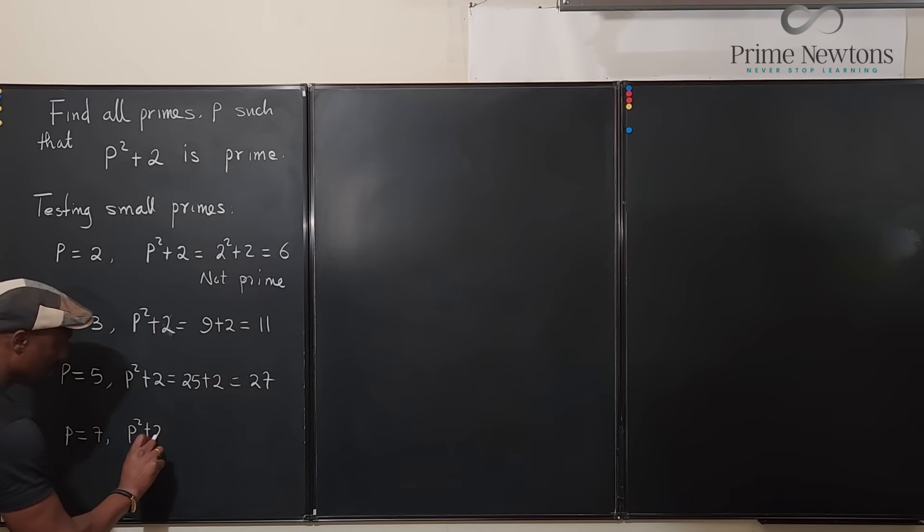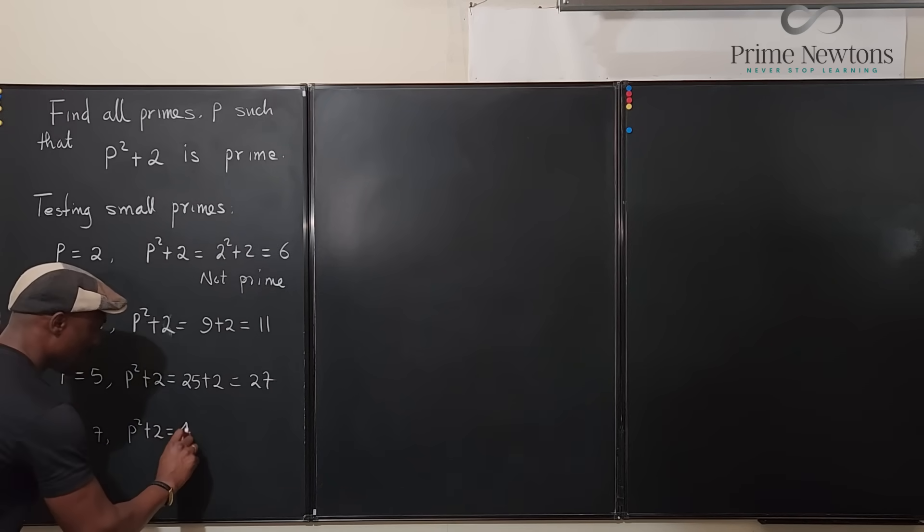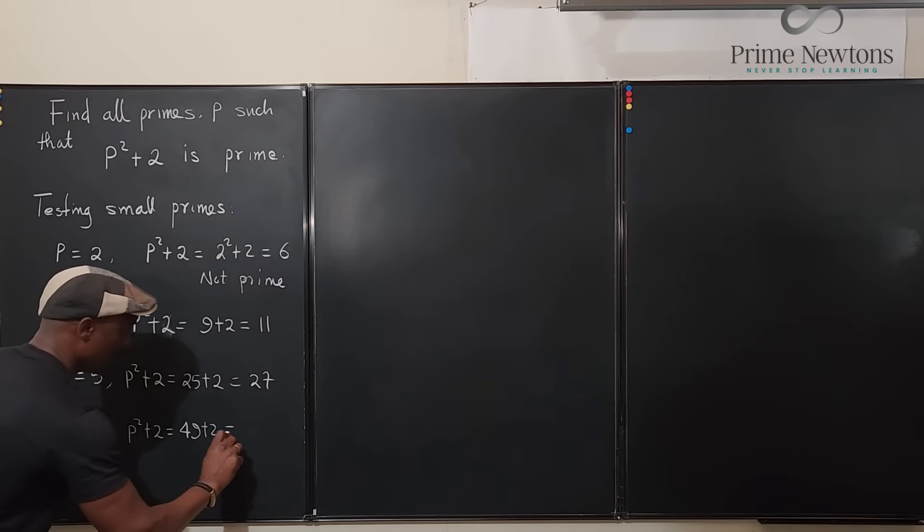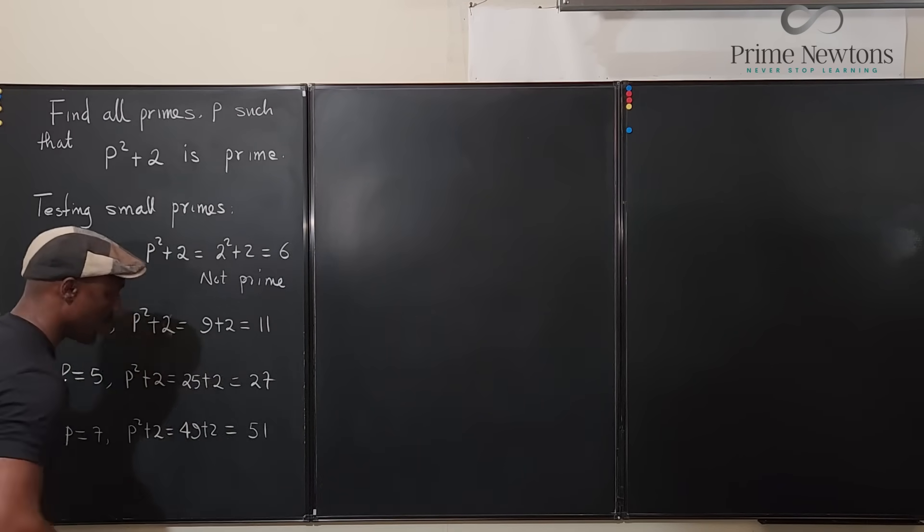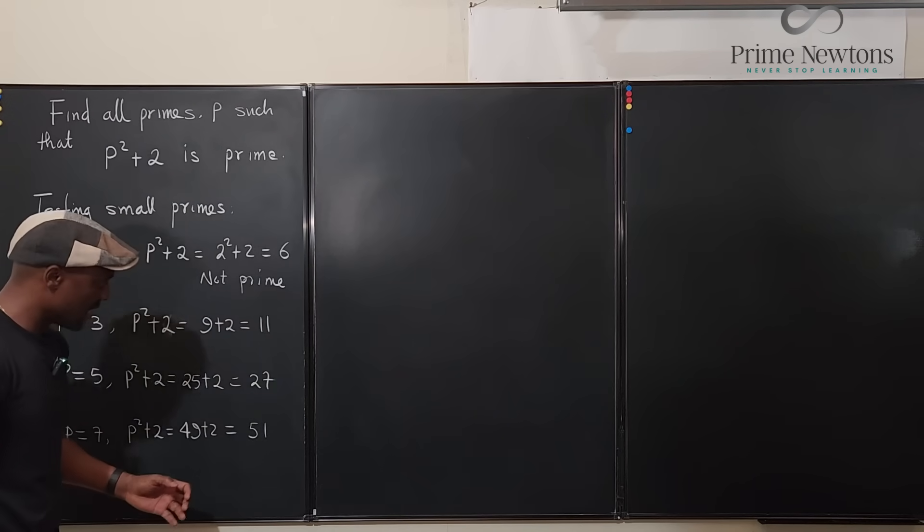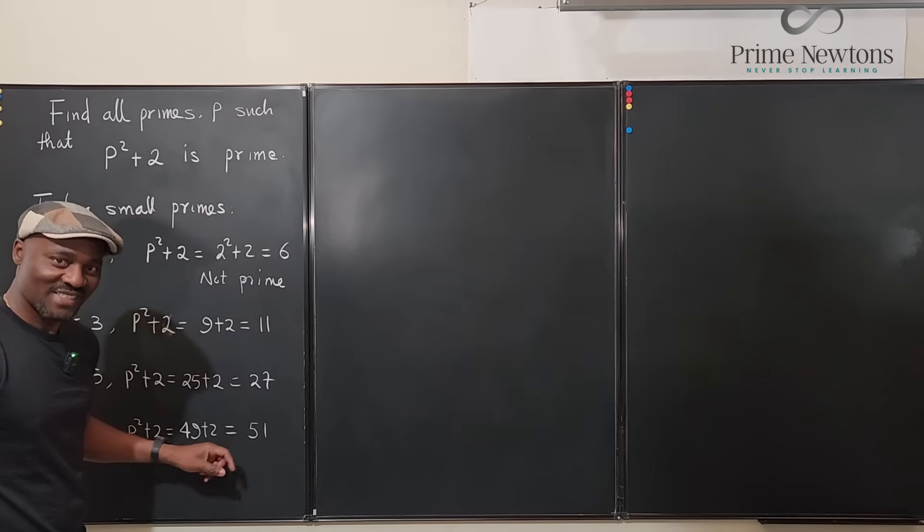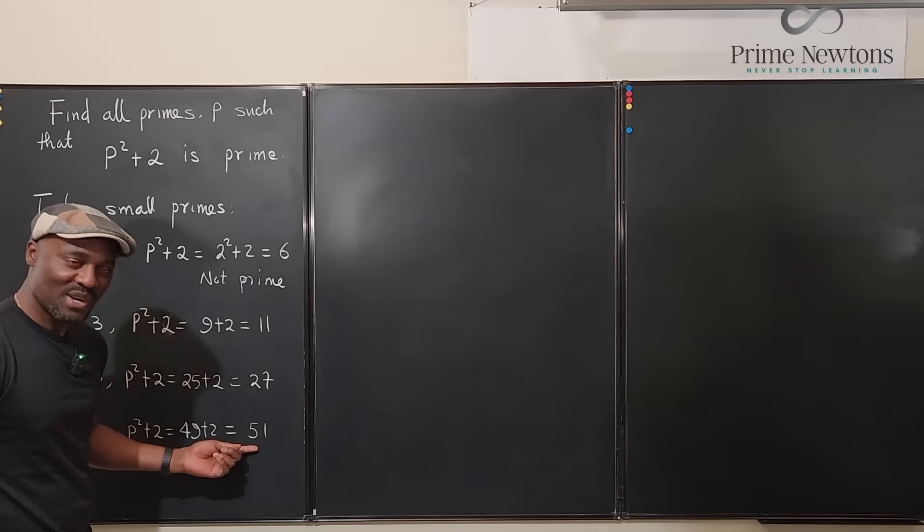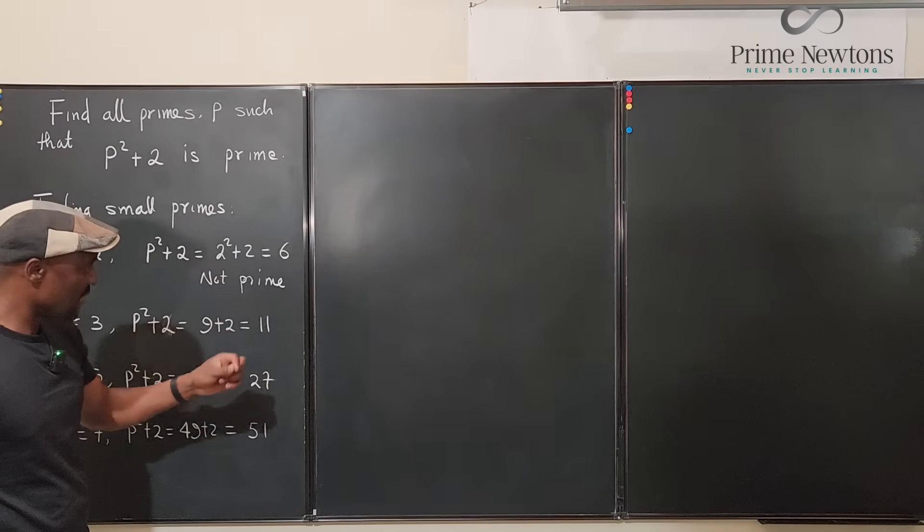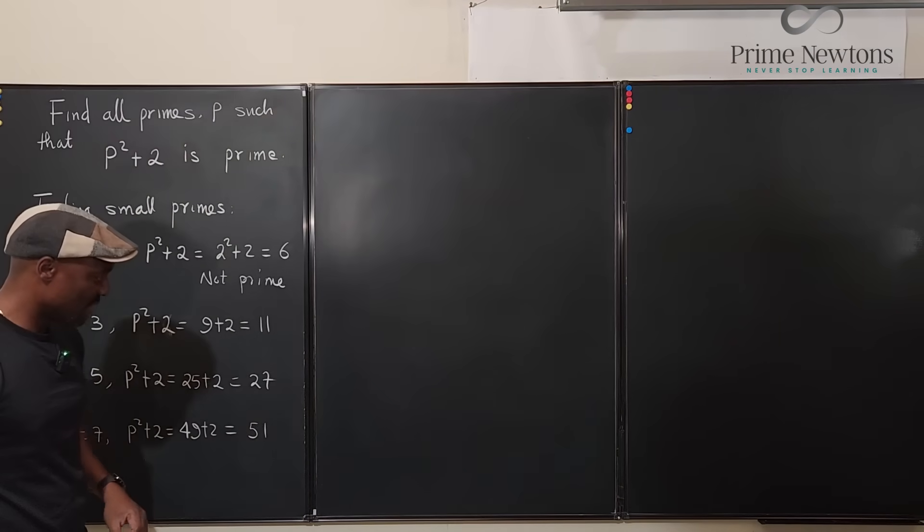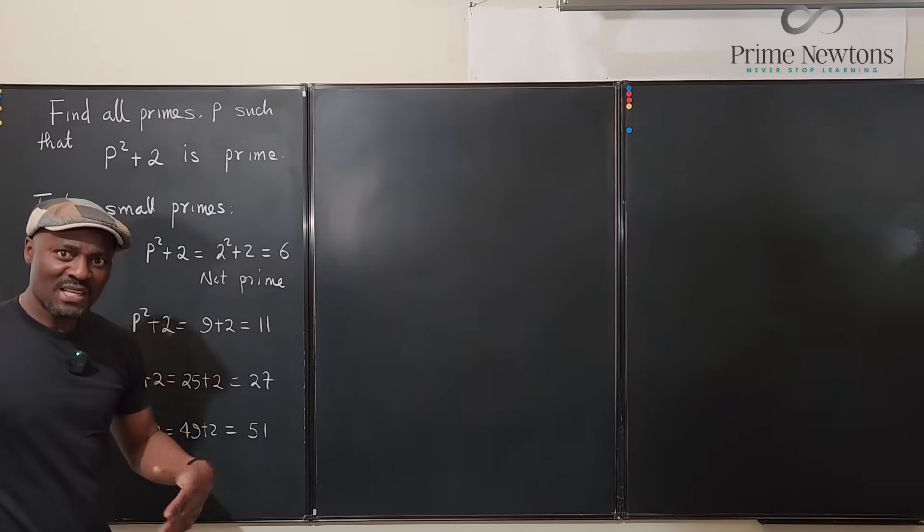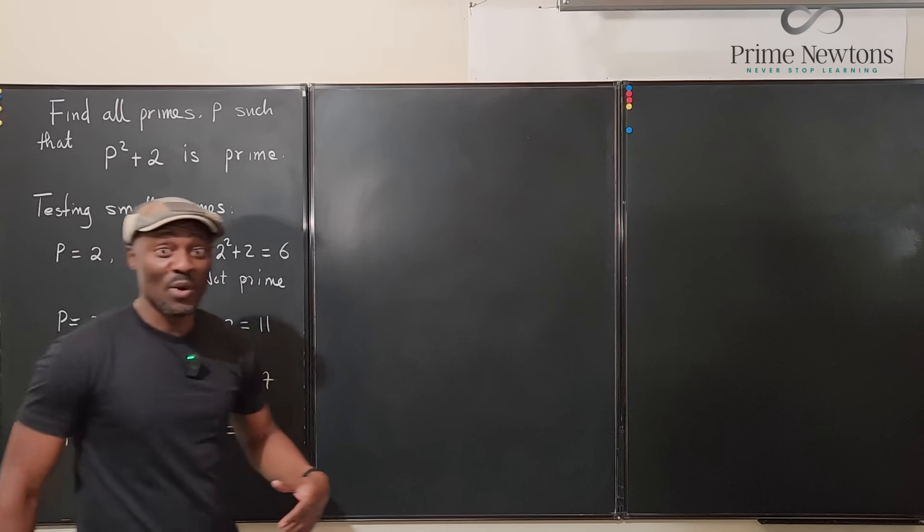Let's take one more, equals 7. We have p squared plus 2. So it looks like this also is not prime, right? This is 17 times 3, this is 2 times 3, this is 9 times 3.